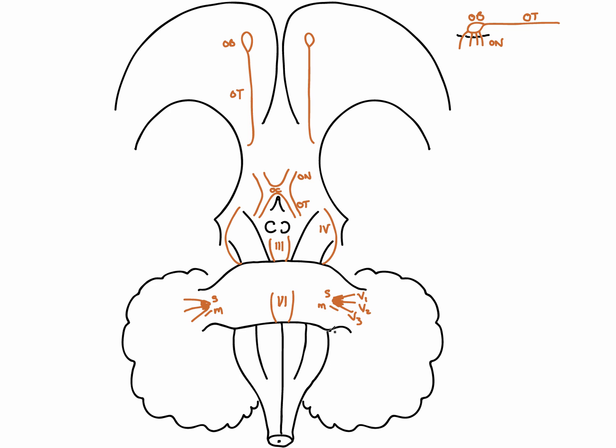Cranial nerves seven and eight emerge from a region known as the cerebellopontine angle. These are the facial nerve and the vestibulocochlear nerve. Both pass into the skull via the internal acoustic meatus. The facial nerve leaves the skull via the stylomastoid foramen — at least its motor fibres do — supplying taste and motor function to the muscles of facial expression. The vestibulocochlear nerve enters the petrous part of the temporal bone, supplying the hearing and balance apparatus: the vestibule and the cochlea.